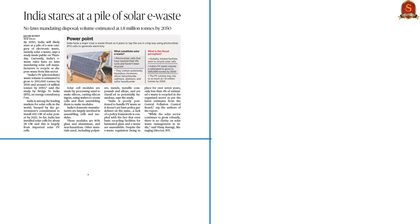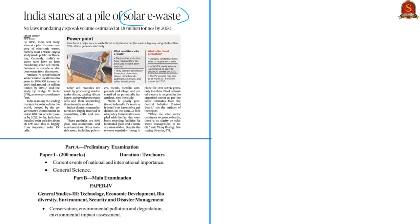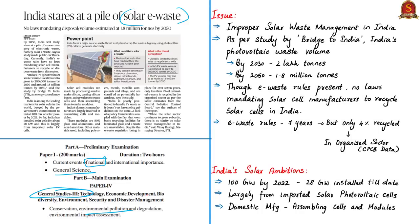The next news article discusses the solar e-waste threat posed to India, which appeared on page number 9 in Chennai edition and page number 7 of the Delhi edition. The information could come under current events of national importance and general science in the prelim syllabus, and under GS3 in environmental pollution in mains. India faces a major solar e-waste threat as it plans to tap the sun using photovoltaic cells to generate electricity. India does not have proper solar waste management, and a recent study by Bridge to India, an energy consultancy firm, estimated that India's photovoltaic waste volume by 2030 will be 2 lakh tons and by 2050 it will be 1.8 million tons.